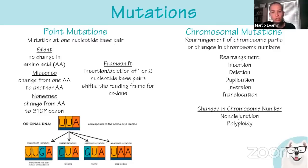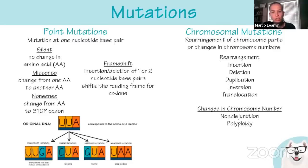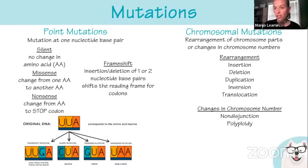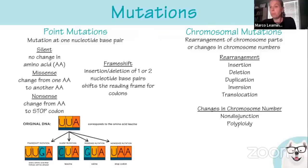Chromosome number changes result from nondisjunction in meiosis — if chromosomes bypass the M checkpoint and enter anaphase without all kinetochores attached to microtubules, you can end up with an extra chromosome in a gamete, leading to conditions like Klinefelter syndrome, Down syndrome, or Turner syndrome. Polyploidy occurs when all chromosomes are duplicated and the gamete is diploid instead of haploid, leading to triploid or tetraploid organisms — common in plants.